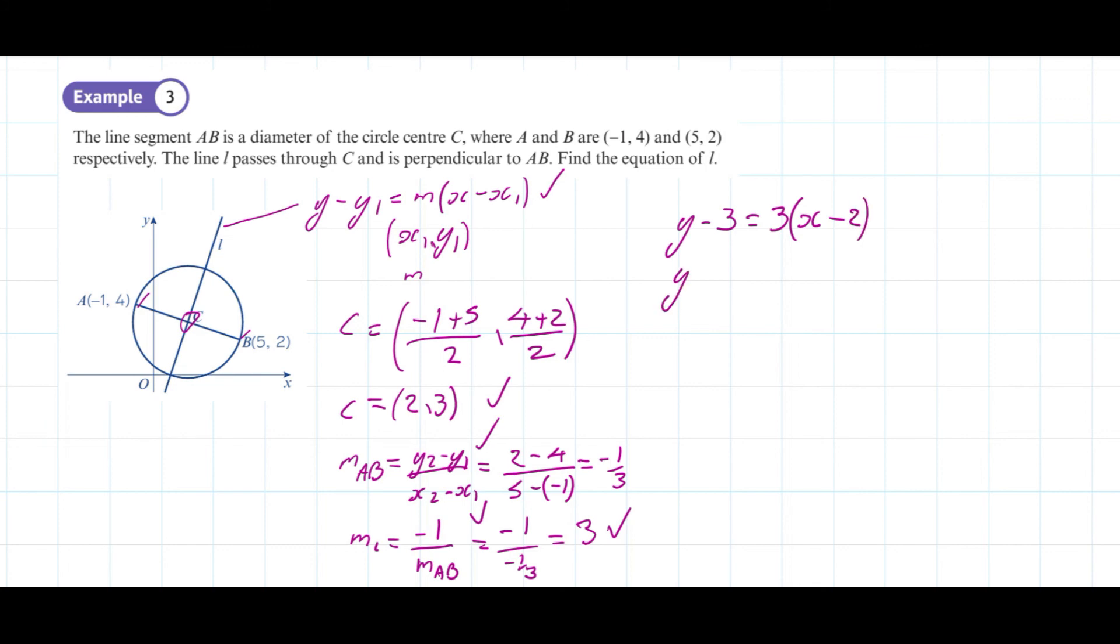Let's expand our brackets. So y - 3 equals 3x - 6. I'm going to add 3 onto both sides to isolate y. So y equals 3x - 3. And there's the equation of our line L.